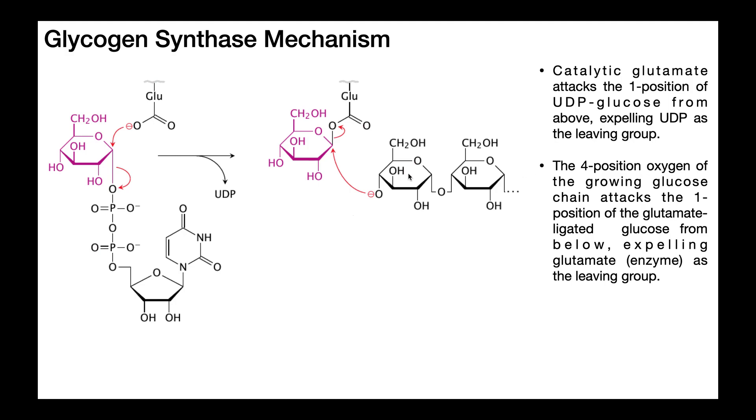So as it stands for this chain of glycogen, this glucose right here in black is the terminal glucose. But you can see here on the four position, we have this oxygen. Once it becomes deprotonated, this oxygen can now attack this one position from the bottom.